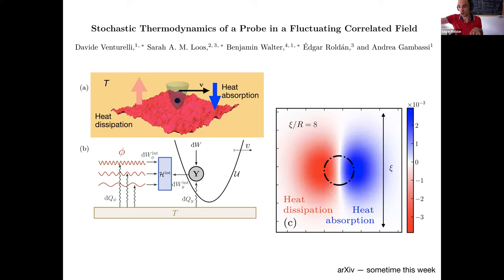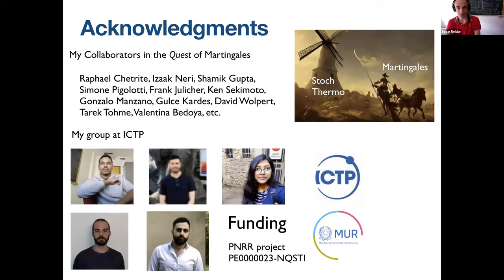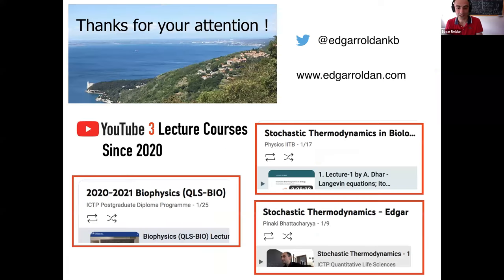I also announce an arXiv submission this week on stochastic thermodynamics of particles in fluctuating fields, where fields can locally extract heat. We are also working on entropy production for cell decision making. I acknowledge my collaborators in the quest of martingales, my group at ICTP, and our funding. For students, I have three lecture courses on YouTube to get you introduced to the field.